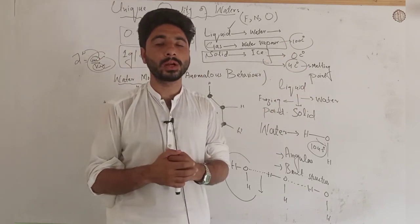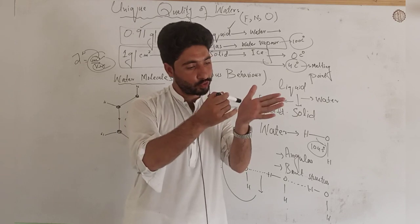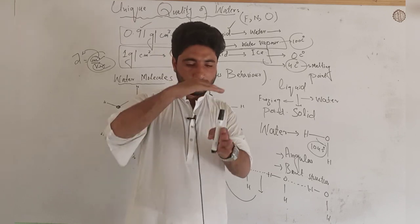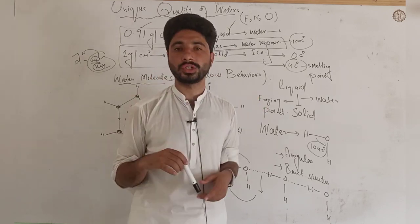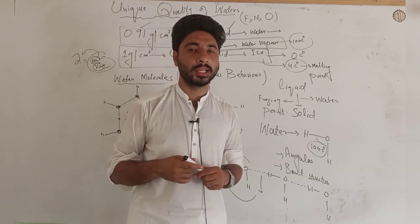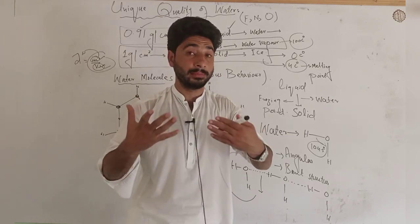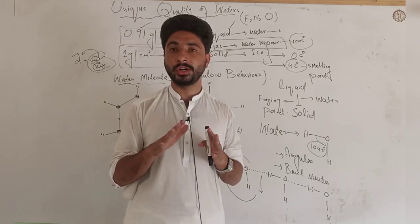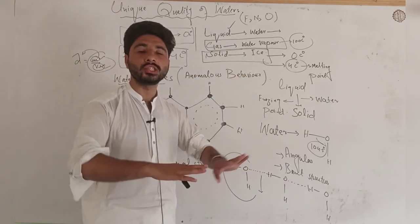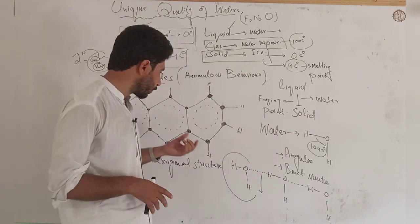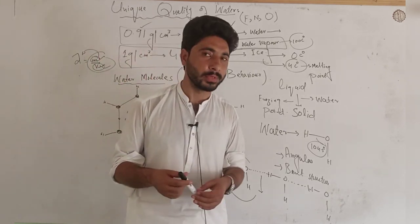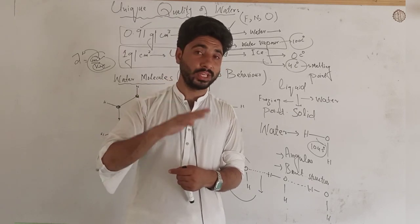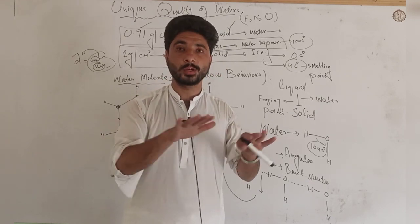In the hexagonal structure, there is empty space. Because of this empty space, the volume of ice is greater than liquid water. This means the density of solid ice is less than liquid water — this is the anomalous behavior. This explains why ice floats on the surface of water — it is an unusual behavior compared to most substances.